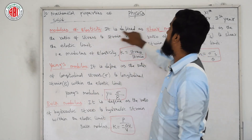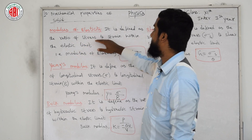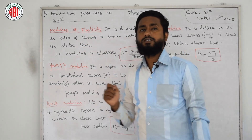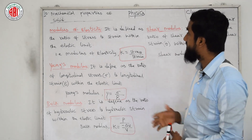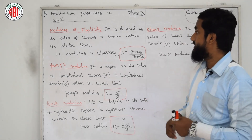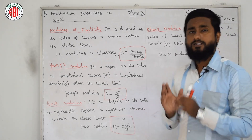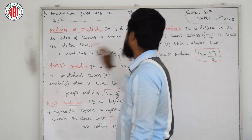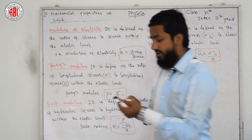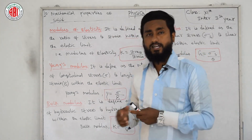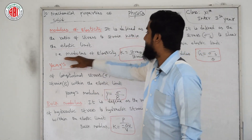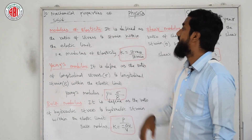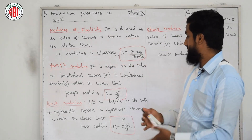Let us start: Modulus of Elasticity. It is defined as the ratio of stress to strain within the elastic limit. As you can see from the definition itself, modulus of elasticity is nothing but the ratio of stress by strain, with the condition that it must be within the elastic limit. This is called the Modulus of Elasticity, denoted by K.